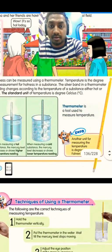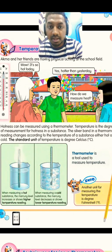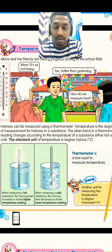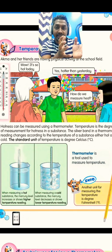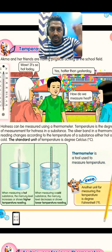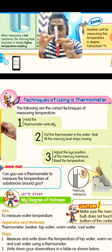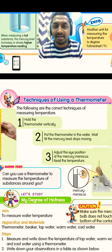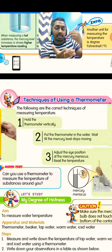Let's recall: a thermometer is a tool to measure temperature. Temperature is the degree of measurement of hotness in a substance. Putting the thermometer in a hot substance shows a higher reading; in a cold substance, it shows a lower reading. The three techniques are: hold the thermometer vertically, put it in the water and wait until mercury stops moving, then adjust your eye position to the meniscus. Make sure it does not touch the base of the beaker.